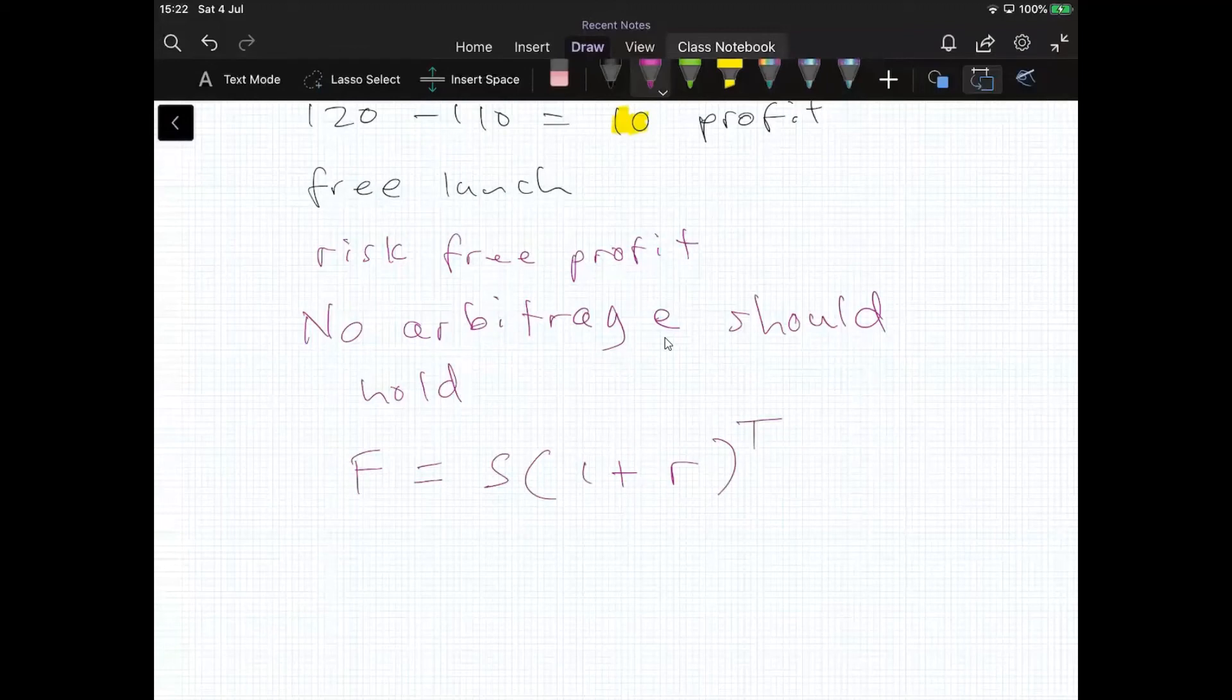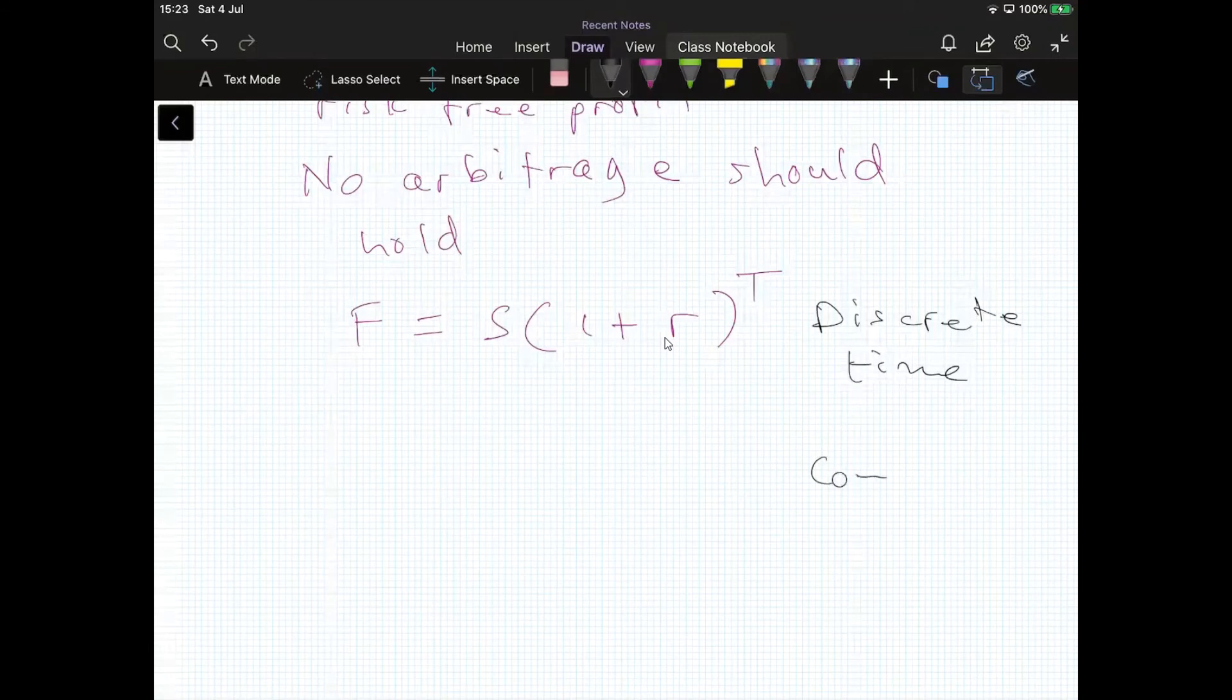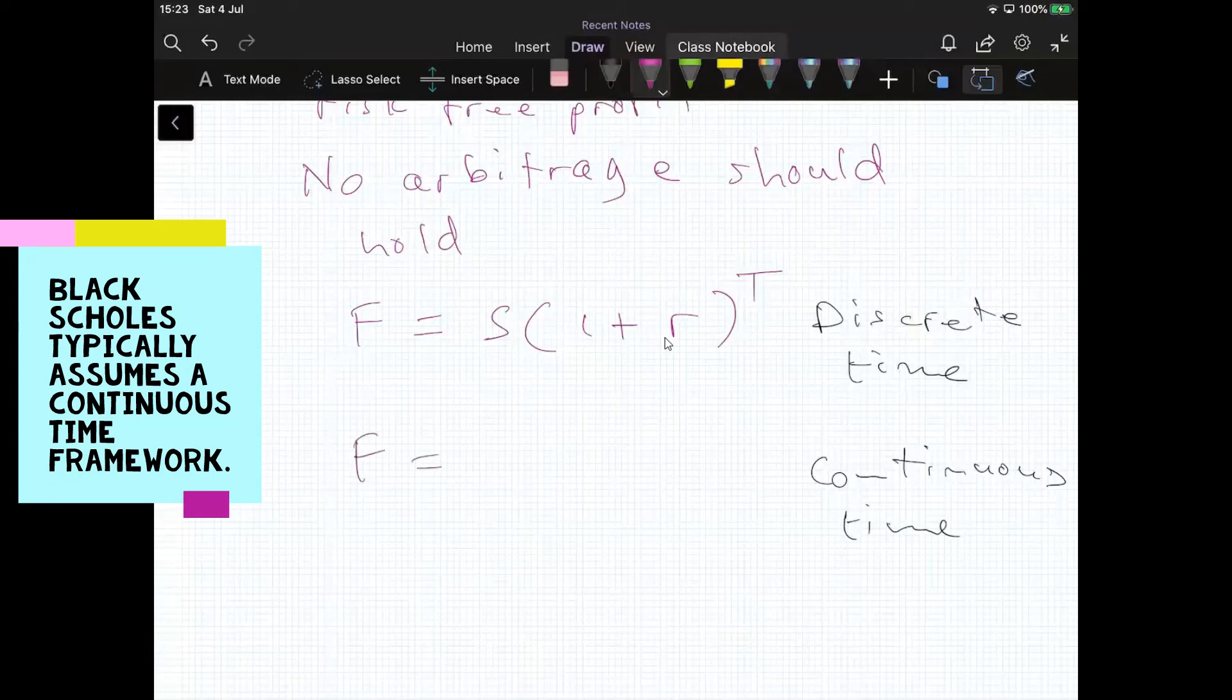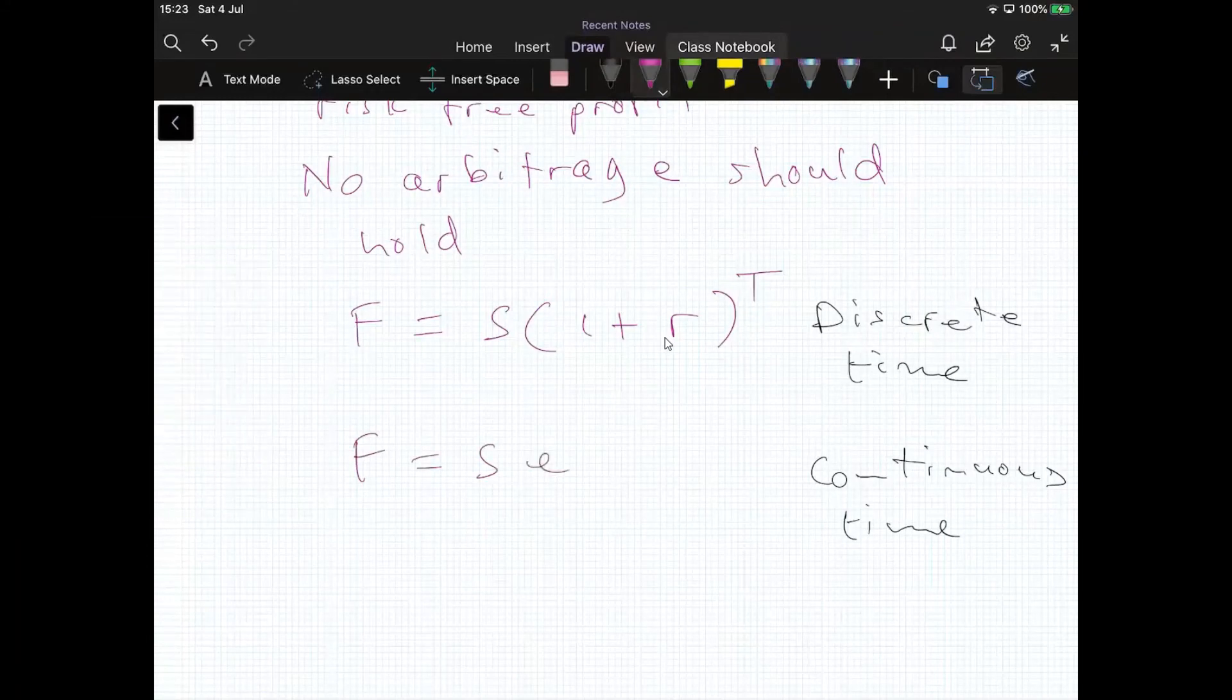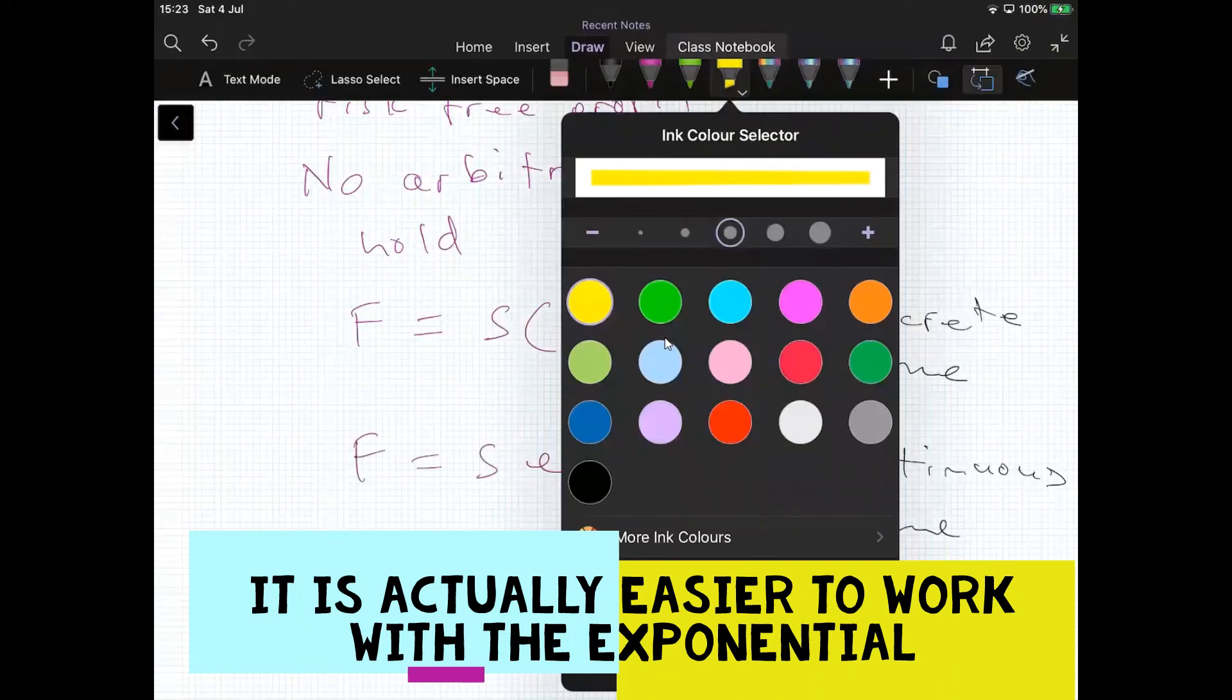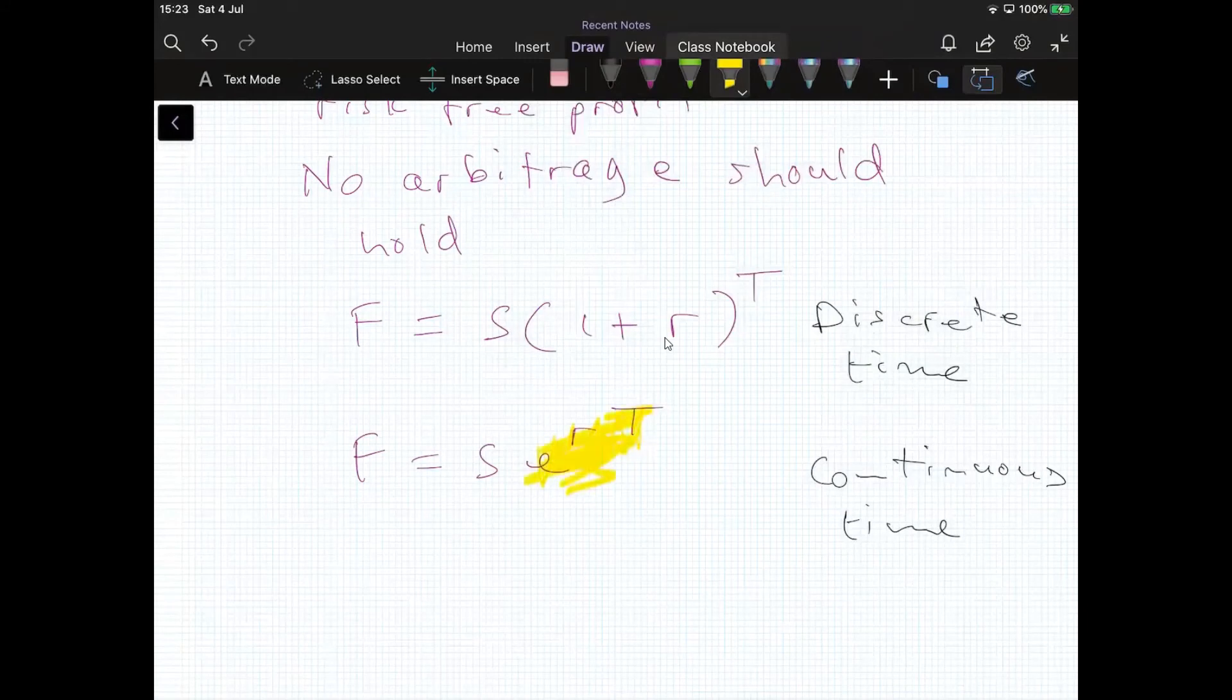If we move away from discrete time, in this instance we're looking at discrete time. Very typical in financial markets, analysts are interested in continuous time, sometimes easier to work with continuous time frames. Then that relationship becomes F, the futures price is equal to the spot e to the r times t, where e here denotes an exponential term.